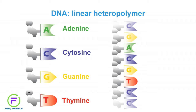First, we need to understand what DNA is. DNA is a linear heteropolymer. A polymer is a type of molecule where we have certain building blocks that repeat. In the case of DNA, it is linear, and the blocks can be the same or different. In DNA these blocks are actually different — that's why we call it a heteropolymer — because one block can be either adenine, cytosine, guanine, or thymine. For simplicity, we just name them A, C, G, T.